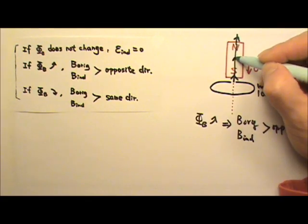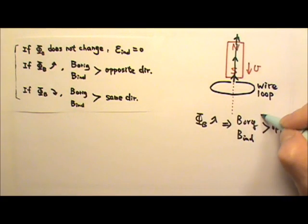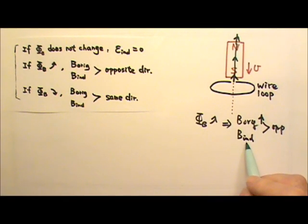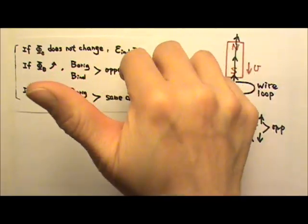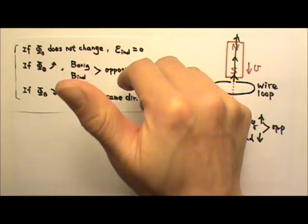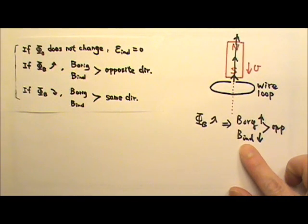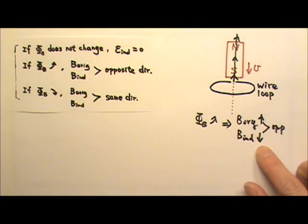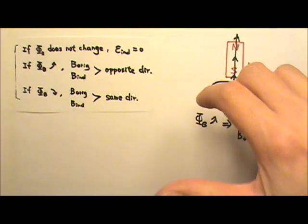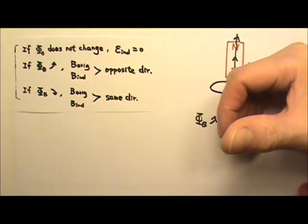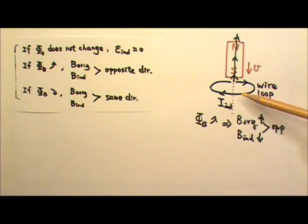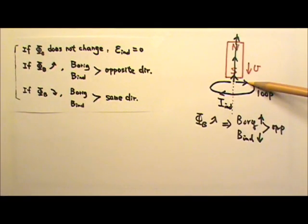Since the flux is increasing, the induced current's magnetic field must go downward, opposite to the original field. Now we use the right-hand rule: with our thumb following the current and curving the four fingers for the direction of the magnetic field, inside the wire loop we need the magnetic field produced by the induced current to go down. That means in the front, the current has to flow to the left. So the induced current in this wire loop must go to the left in the front and to the right in the back of the loop.